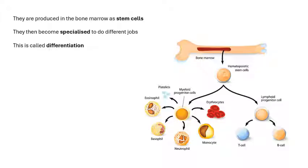White blood cells are produced in the bone marrow as stem cells. Stem cells don't have a particular job; they will then become specialized to do a particular job, developing into different types of cell. When they become specialized to do different jobs, that process is called differentiation.